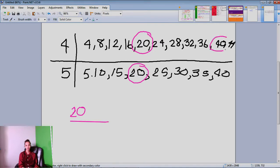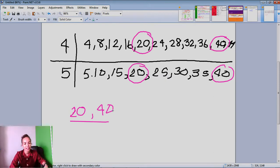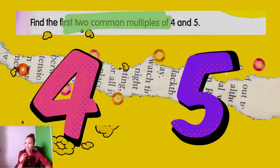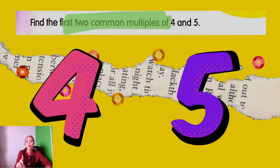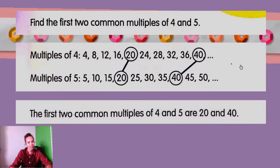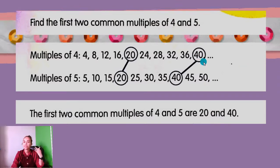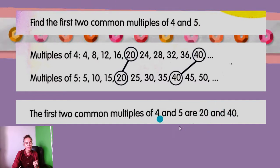Is there any more? Yes — 40 and 40. So the first 2 common multiples of 4 and 5 are 20 and 40. Let's go back to the presentation to see if we got the same answers. We only need the first 2 common multiples. Perfect — we did exactly the same thing they did. They listed multiples of 4 and 5, going up to the first 10 of each, and we found the first 2 common multiples were 20 and 40.